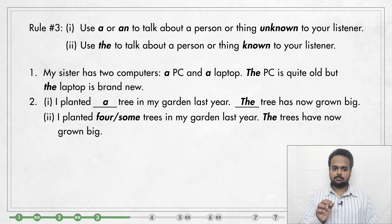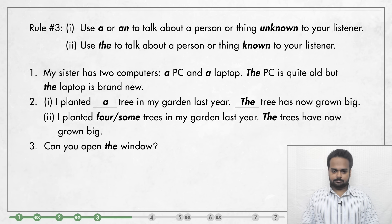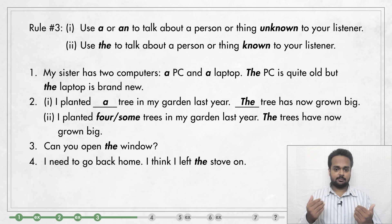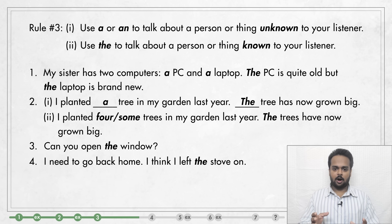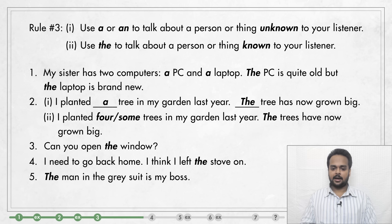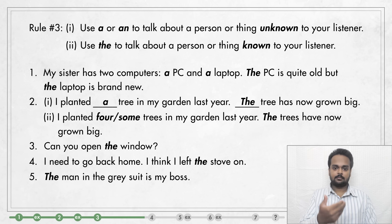But sometimes you don't need A or AN because your listener will automatically understand what you are referring to. For example: Can you open the window? If we're sitting in a room and I say this to you, you will know which window I'm talking about. Or: I need to go back home, I think I left the stove on. You can understand from the situation that I mean the stove in my house. But this isn't always possible. For example, if I say 'the man is my boss,' you will ask 'which man?' But if I say 'the man in the grey suit is my boss,' you know which one I'm talking about. So here we mention a noun with THE — the man — and then give information to identify that noun — in the grey suit.